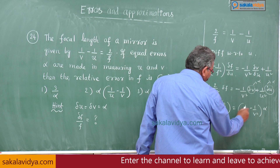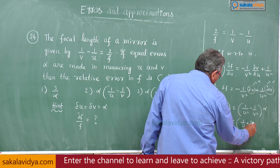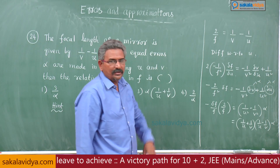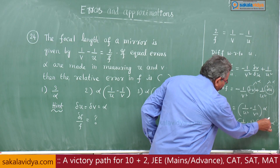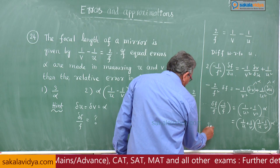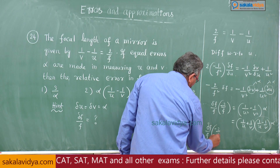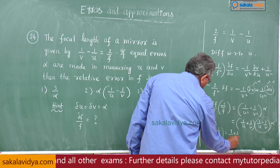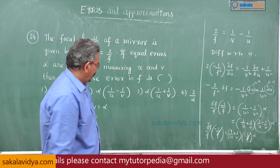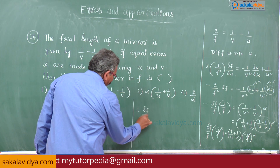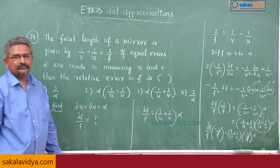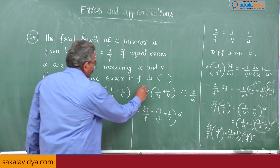Using the difference of squares: 1/u² − 1/v² = (1/u + 1/v)(1/u − 1/v). We know from the mirror formula that 1/u − 1/v = −2/f (rearranged). Substituting and cancelling −2/f from both sides, the relative error δf/f = (1/u + 1/v) × α. The third option is correct.